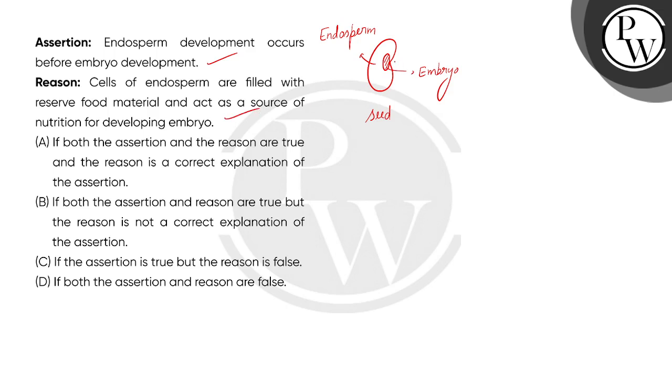Correct diya hua hai yahan pe kyunki ye jo endosperm ki jo cells hai woh unhe mein kya hota reserved food material hota hai jo ki act karengi source ki tarah nutrition ki source ki tarah jo ki required hoga embryo ke development ke liye isi liye jo hai embryo development hone se pehle endosperm development hota hai dono correct hai.